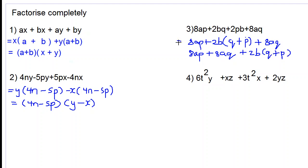Let's factor this now. Factoring out 8a, we'll have p plus q plus 2b by p plus q. We can write q plus p as p plus q.